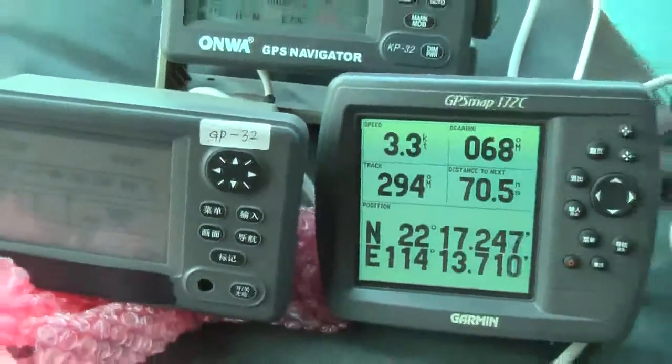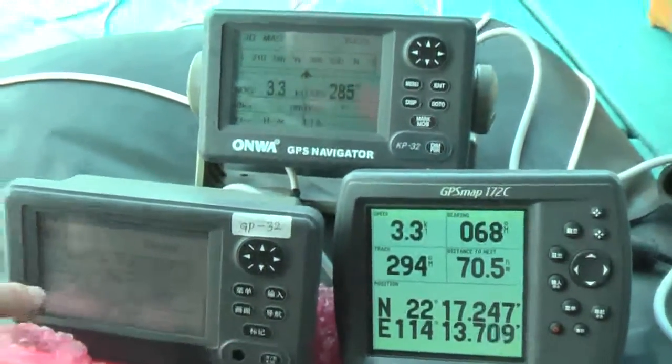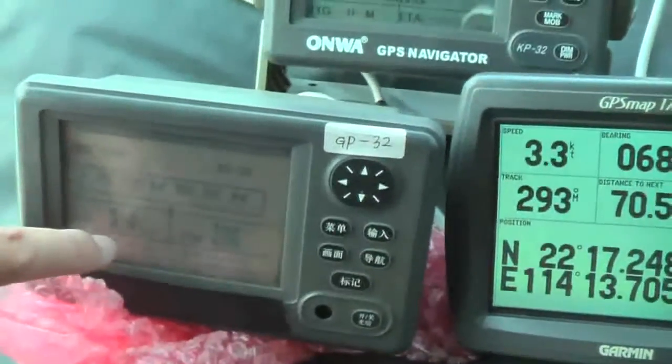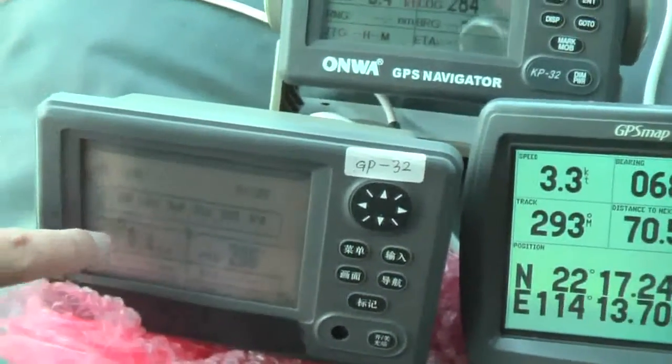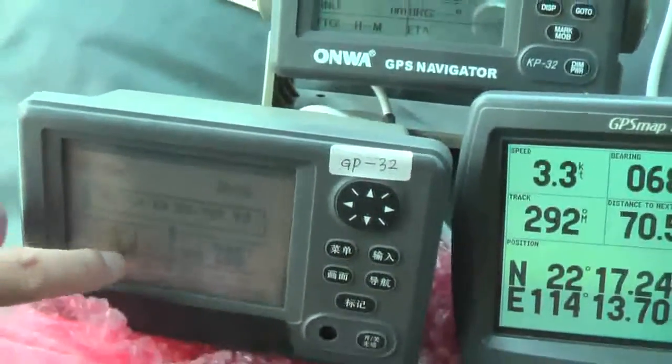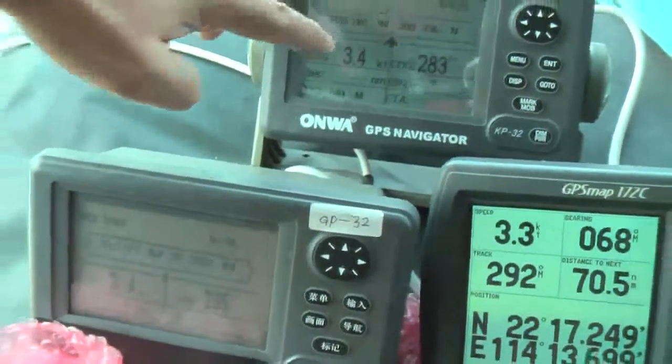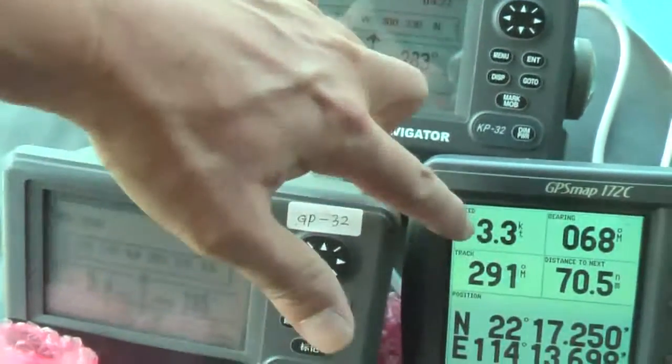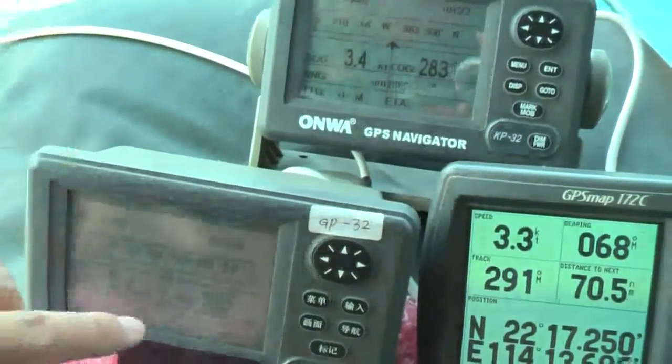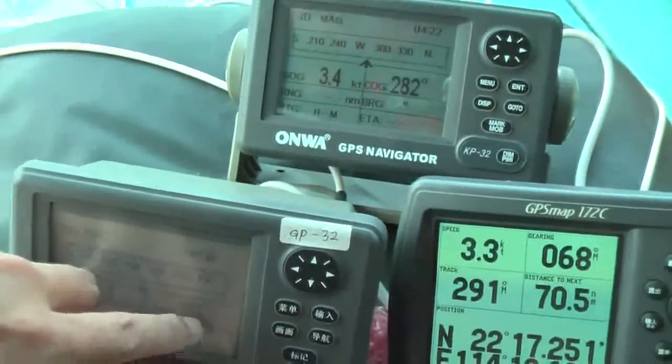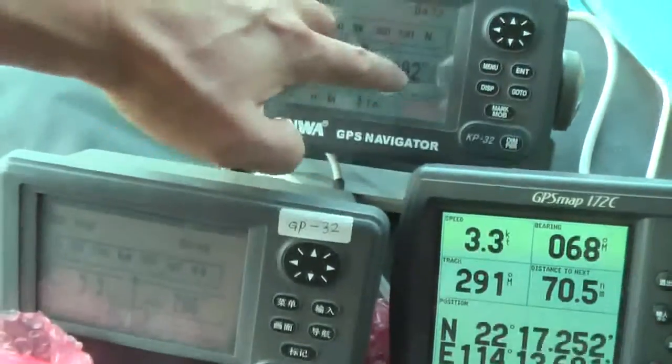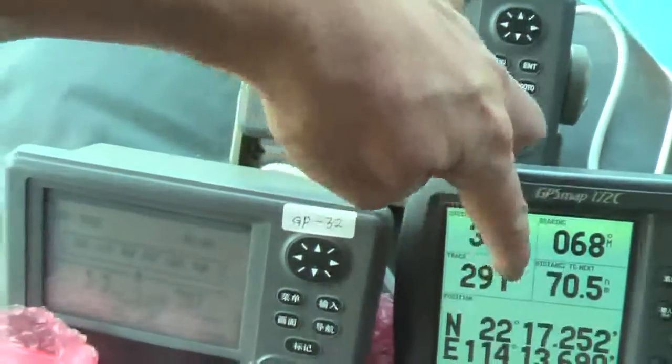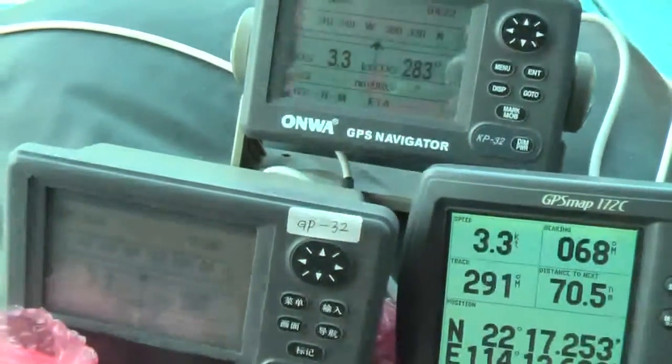Now we are going in the speed of 3.3 knots. So we can check the speed: 3.4, 3.4, 3.3. And the heading is 286, 282, 291, more or less the same.